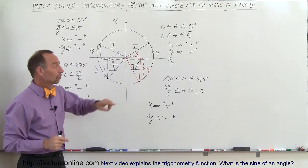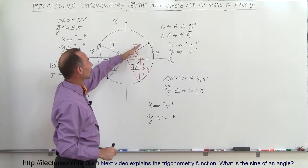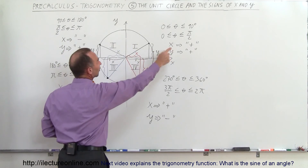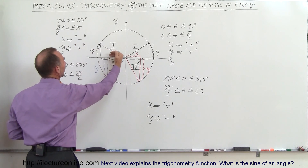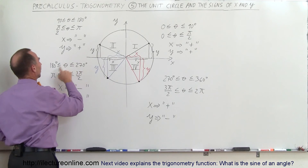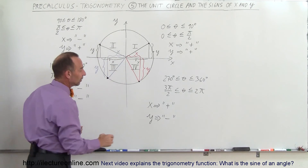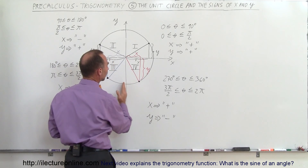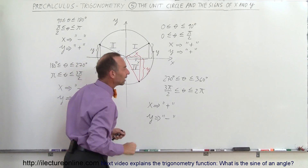So the x and y values on the unit circle, as we go around the circle and the angle increases from 0 to 90, both are positive. From 90 to 180, x is negative and y is positive. From 180 to 270 degrees, x is negative and y is negative. And in the fourth quadrant, between 270 and 360 degrees, x is positive again and y is negative.